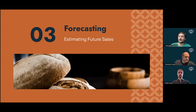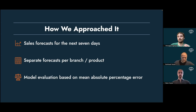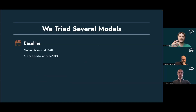Next we went on to do some modeling. First, we always restricted our sales forecast to the next seven days. Due to the many differences between branches and products, we always made separate forecasts for each branch-product combination. To evaluate model performance we used mean absolute percentage error, which estimates the average prediction error in percent. As a baseline we established a naive seasonal drift model, which simply uses the sales of the preceding week as a proxy for the next seven days. This model already showed good forecasting performance, over or underestimating actual sales by only about 17 percent.